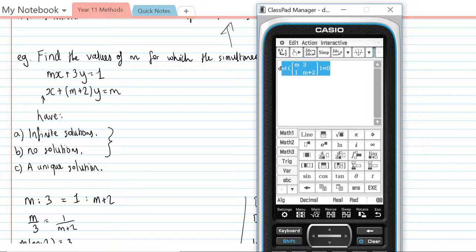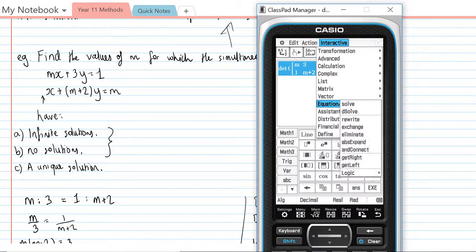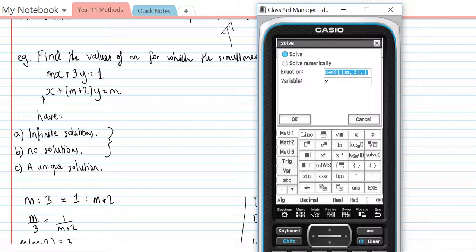So I'm just going to highlight this, go to interactive, equation and then solve. And I'm going to change the variable to m.